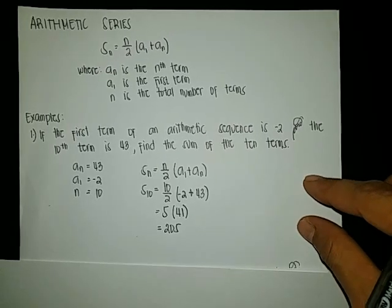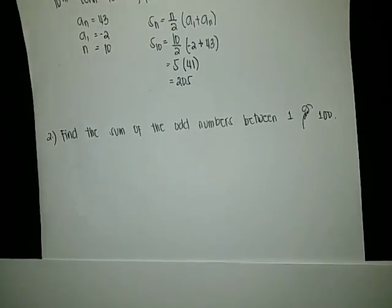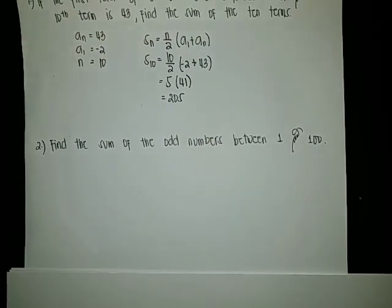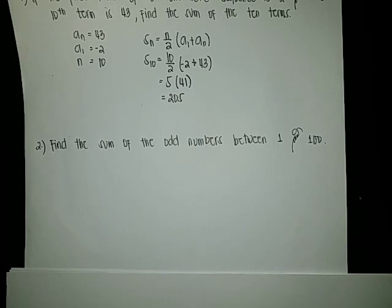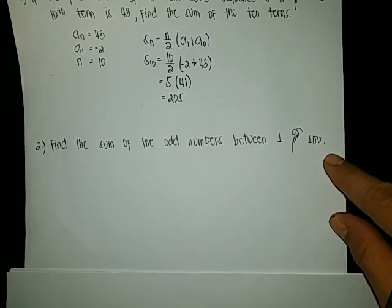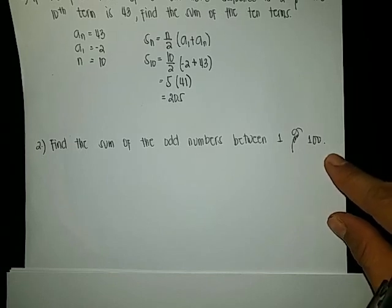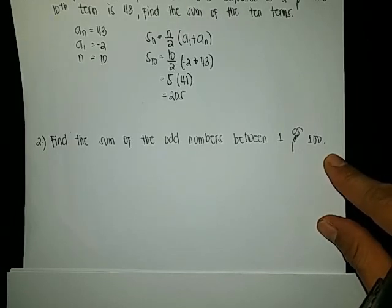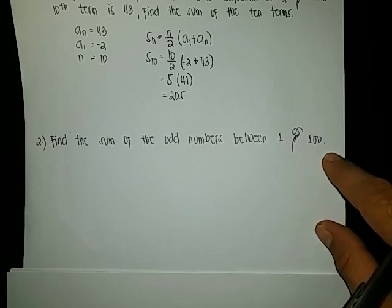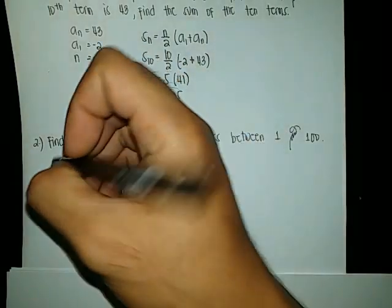Next example: Find the sum of the odd numbers between 1 and 100. The odd numbers are 3, 5, 7, 9, 11, and so on. So in this example, we are tasked to find the sum of odd numbers from 1 to 100. Let us identify A sub n, A sub 1, and n.